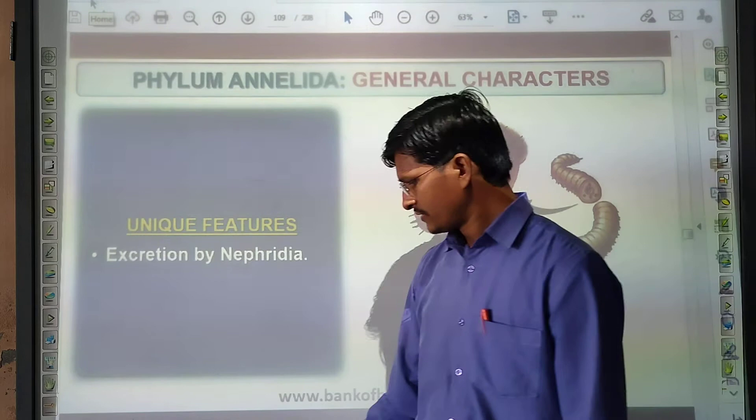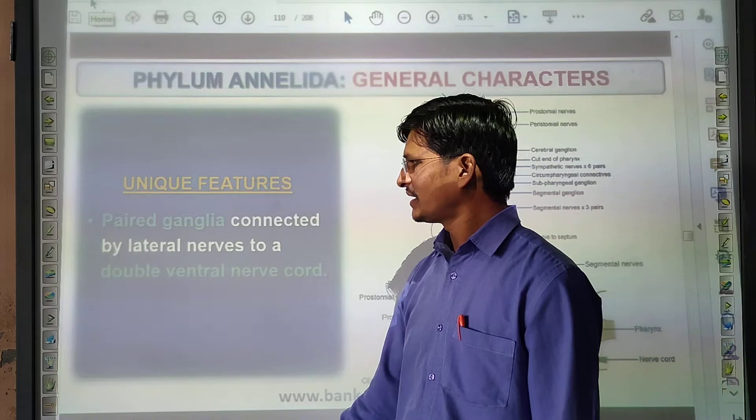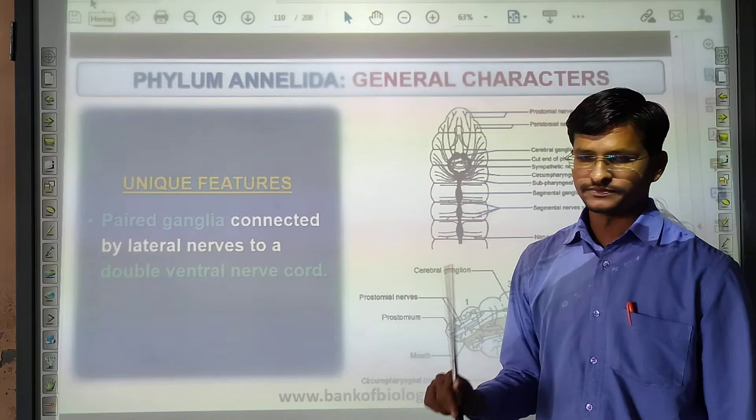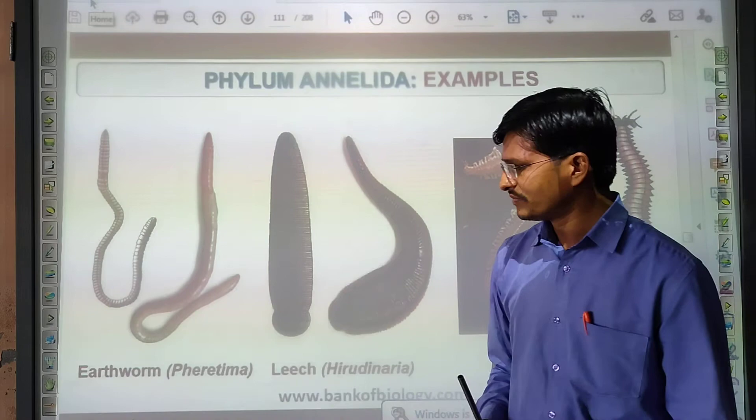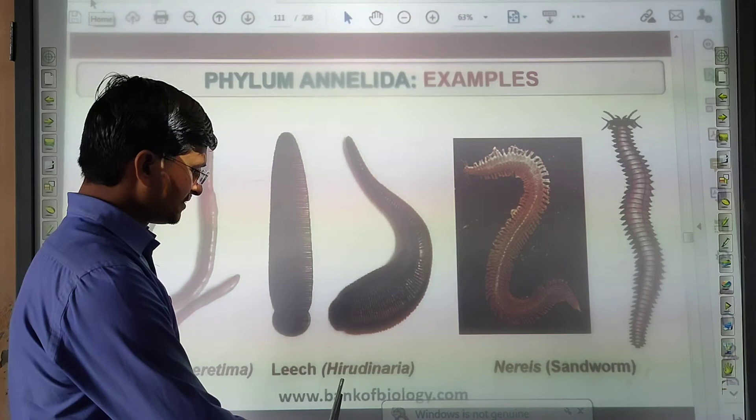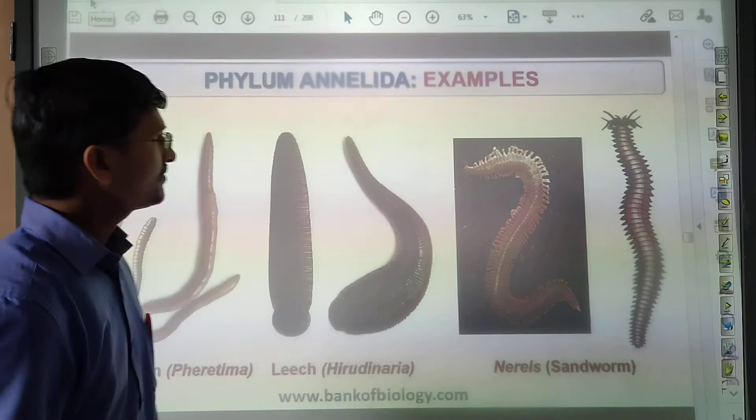Paired ganglia are connected by lateral nerves to a double ventral nerve cord — remember the double ventral nerve cord. Examples of Annelida are: earthworm, Nereis, leech, Hirudinaria, and sandworm. These are the examples of Annelida.